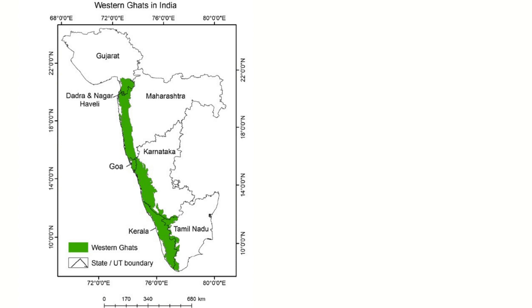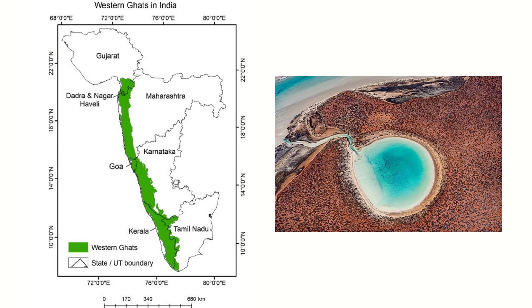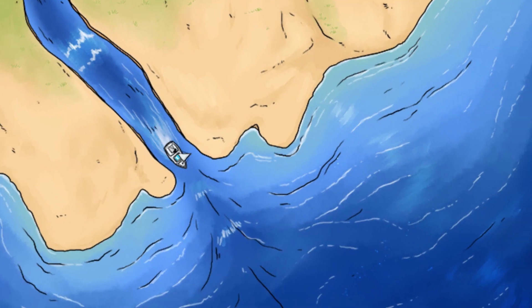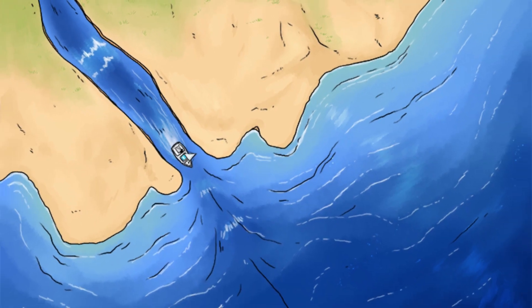You can find several lagoons along the Malabar coast here. The western coastal plains are devoid of any delta but instead form estuaries.